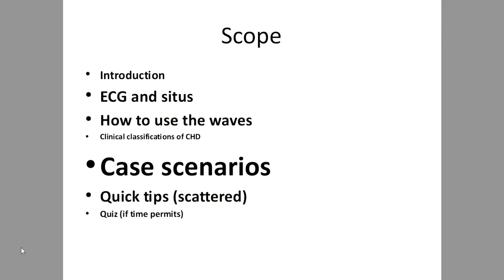This presentation covers a small introduction on ECG and the situs test, how to use waveforms in ECG, a brief mention on clinical classification of congenital heart disease, and the bulk of the discussion will focus on case scenarios. There are some scattered quick tips for quick references. The X-ray material is omitted due to lack of time.